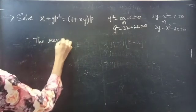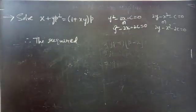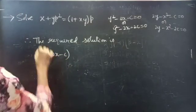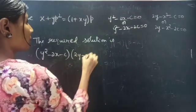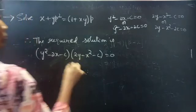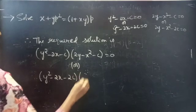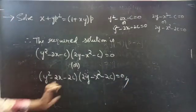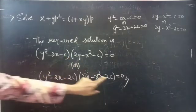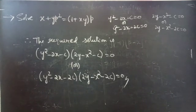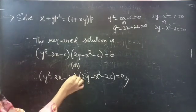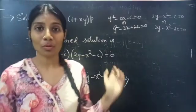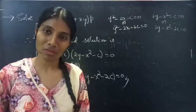Therefore, the required solution is the product of both factors: y squared minus 2x minus 2c into 2y minus x squared minus 2c equals to 0. Here we have used 2c as c since c is an arbitrary constant and we can rename it freely. We have seen a problem from Solvable for P in this video. Hope you understand. See you in the next video. Bye-bye.